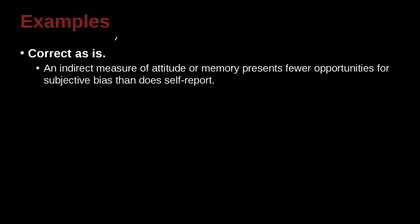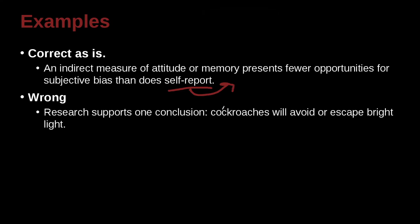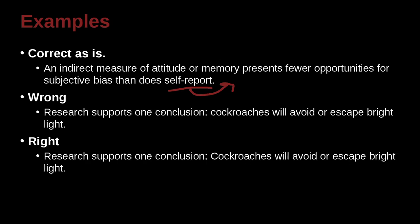It's a compound word that can be written. An indirect measure of attitude or memory presents fewer opportunities for subjective bias than does self-report. So a self-report is a type of report. Now we don't have anything here to modify, do we? But that's just because we stuck it at the end of the sentence. It is one kind. So an indirect measure of attitude or memory presents fewer opportunities for subjective bias than does self-report. There are other kinds of reports, aren't there? There is an indirect measure of attitude or memory. There's all kinds of ways to measure this. This is one way to measure it.